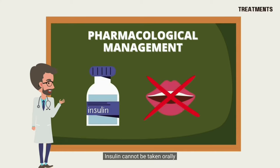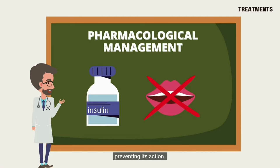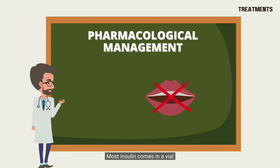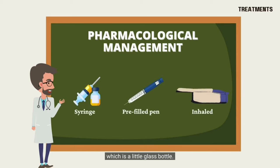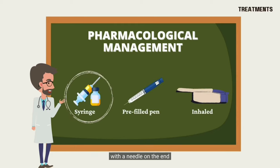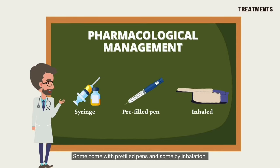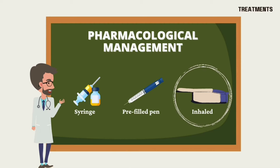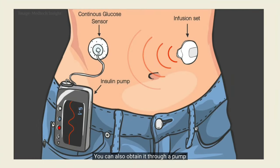Insulin cannot be taken orally to lower blood sugar because stomach enzymes will break down the insulin, preventing its action. Most insulin comes in a vial, which is a small glass bottle. You will need to use a syringe with a needle to draw it out and give yourself the shot. Some come with pre-filled pens and some by inhalation. You can also obtain it through a pump, which is a device you wear that delivers insulin to your body via a small tube.